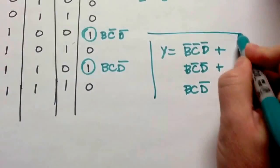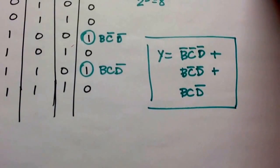And so that would be our logic expression for this three input truth table. Thanks to all.